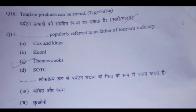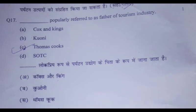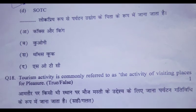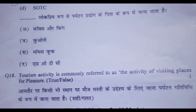Question 16: Tourism products can be stored. True or False — False. Question 17: Dash is popularly referred to as father of the tourism industry. A: Cox and Kings, B: County, C: Thomas Cook, D: SOTC. Answer: C, Thomas Cook. Question 18: Tourism activity is commonly referred to as the activity of visiting places for pleasure. True or False.